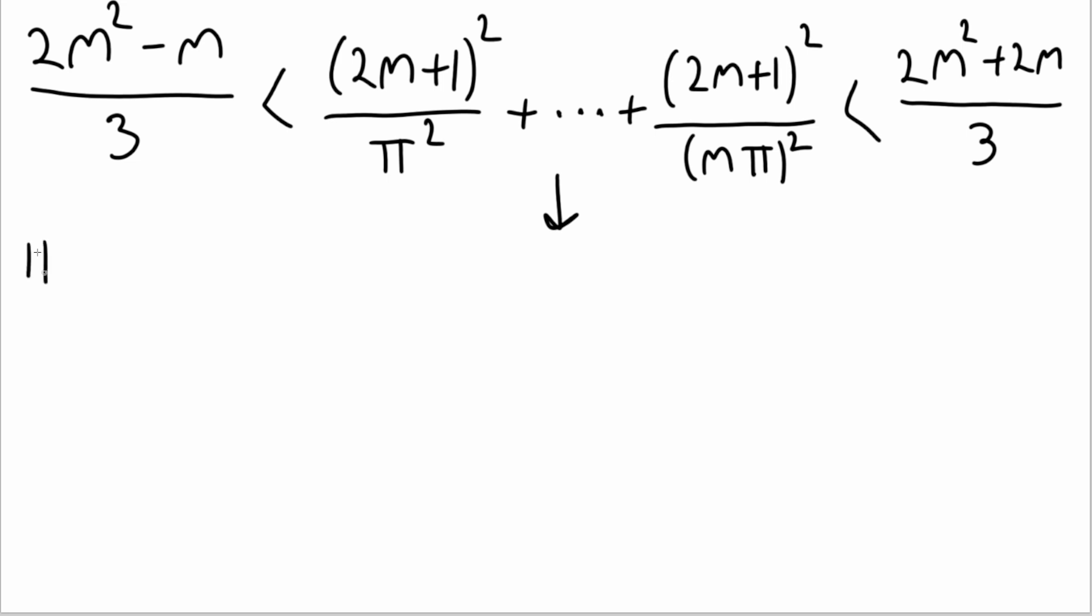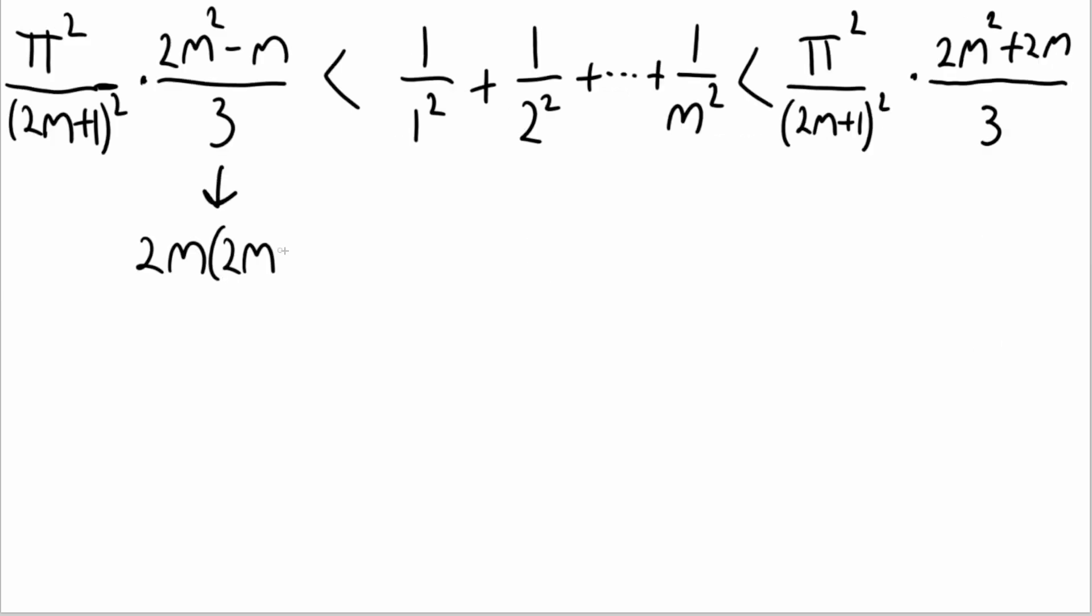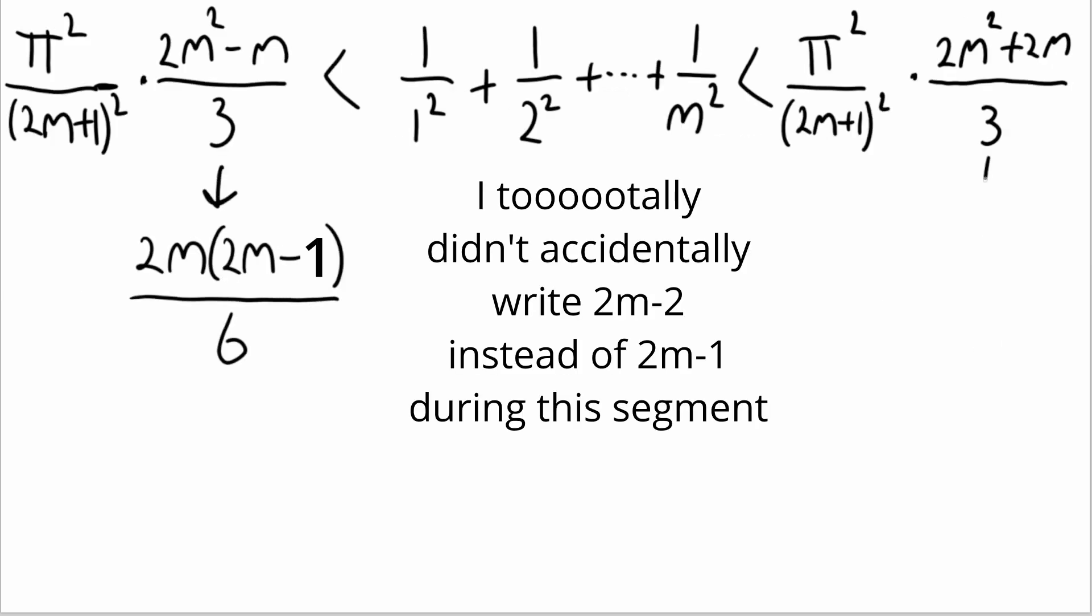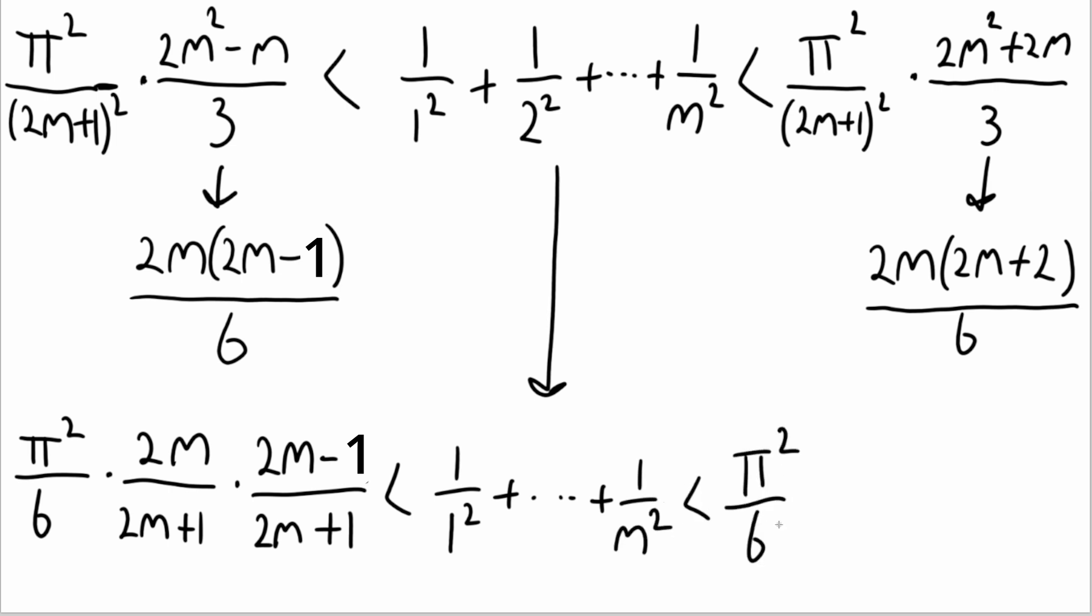If we take our new inequality and multiply every term by pi squared over 2m plus 1 squared, the middle part of the inequality becomes the Basel problem. This is where the pi squared term that's in the solution actually comes into play. It might seem counterintuitive to do so, but we're going to rewrite our sum formulae in a less simplified form. This allows us to split the expressions into three fractions and shuffle their numerators and denominators as we wish. And now our pi squared terms have taken the more familiar form of pi squared over 6.